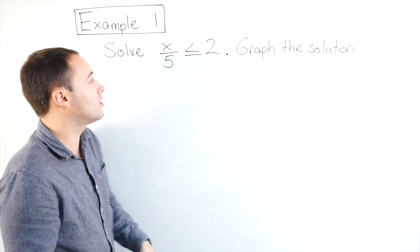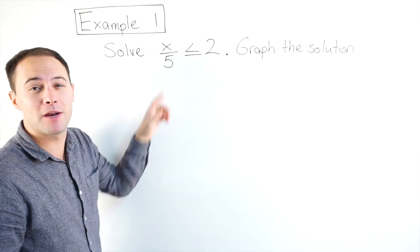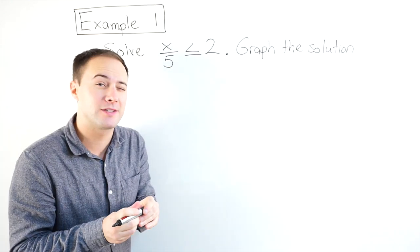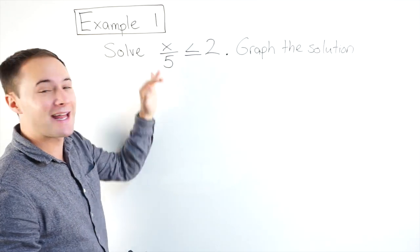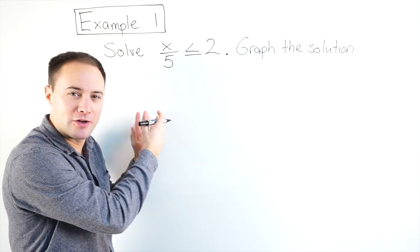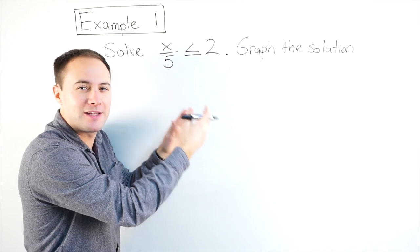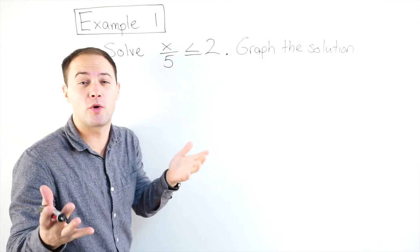Our goal is to get the variable alone. Right now x is being divided by 5, so I do that inverse operation and multiply this side by 5 to get that x alone, and anything I do to one side, I have to do the same to the other side to make sure the inequality stays true.